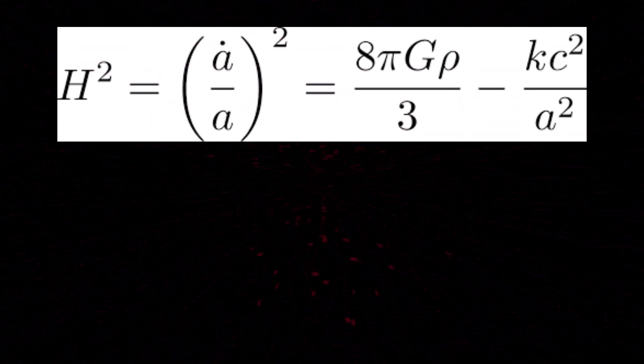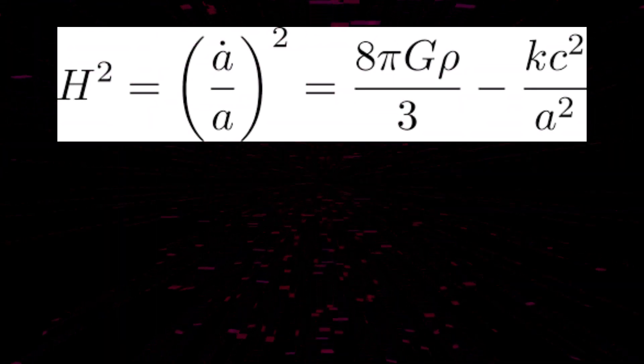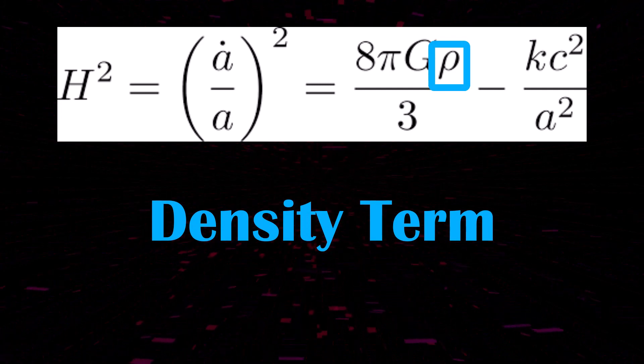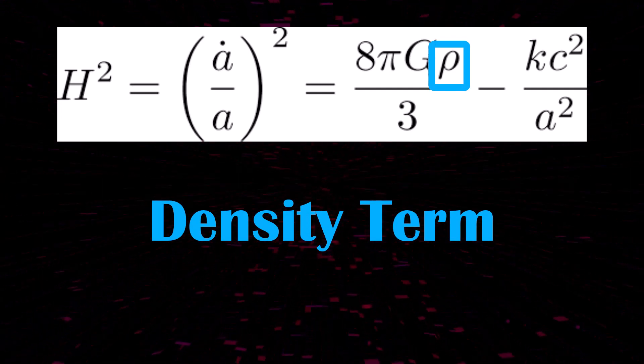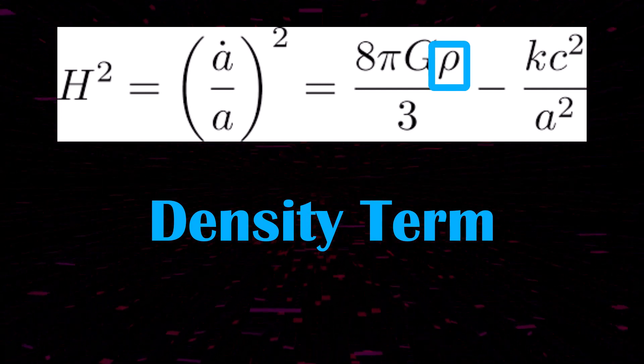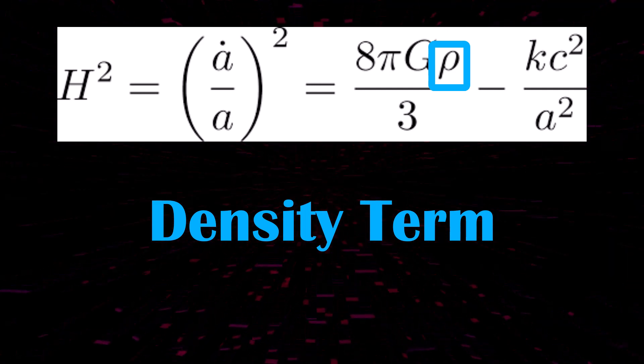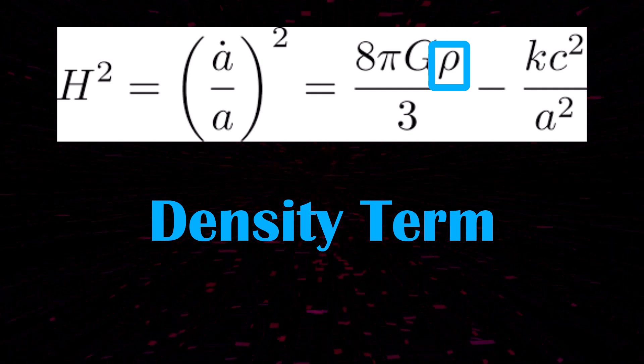Dark energy acts against regular matter which attempts to hold itself together through gravity. These are both represented by the Rho term in the Friedman equation, which is the density term, and can be split into matter density and dark energy density. There is also a small amount of radiation in that term, but in today's universe the radiation density is so tiny, and so can be neglected.